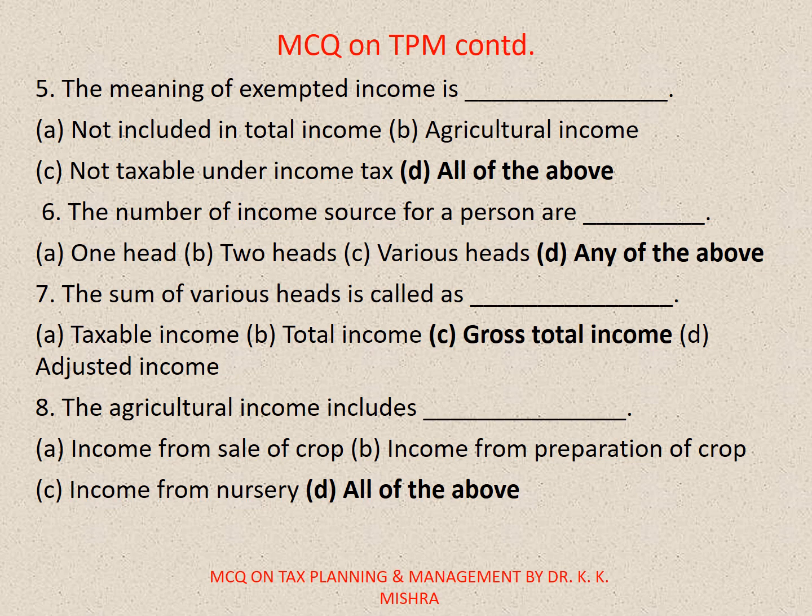Question 6: The number of income heads for a person are — A. One head, B. Two heads, C. Various heads, D. Any of the above. Question 7: The sum of various heads is called — A. Taxable income, B. Total income, C. Gross total income, D. Adjusted income. The correct option is C. Gross total income.